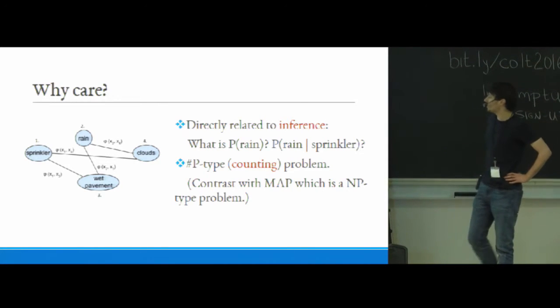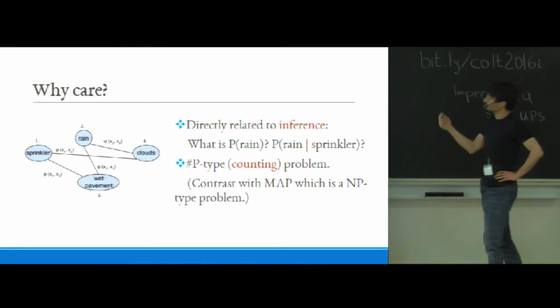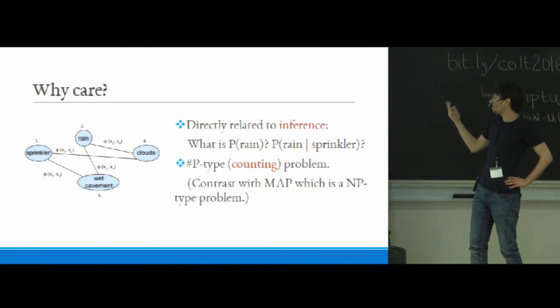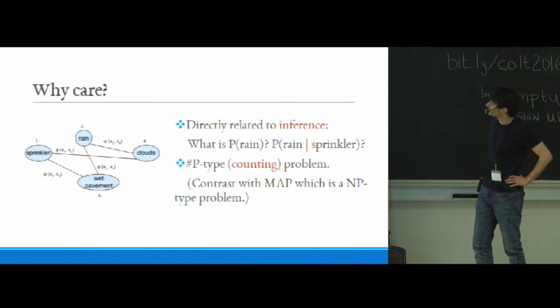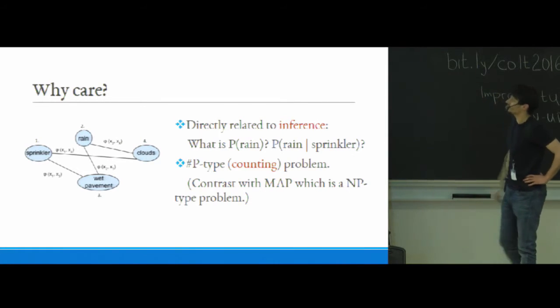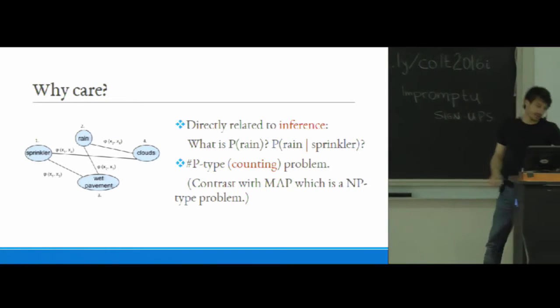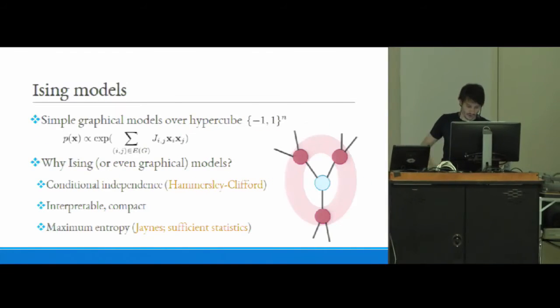More theoretically speaking, you might care about this because this is a #P or counting type of problem, which you might contrast with MAP, which is maybe a more common task, which here in this example would basically be what's the most likely configuration of the nodes in the graph. And this is an NP type of problem.